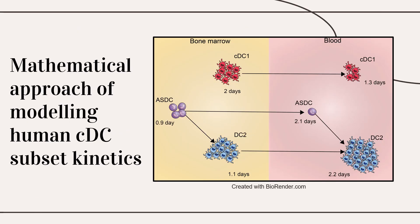All together, these data predict the average circulating lifespan of ASDC to be around 2.1 days, CDC1 for 1.3 days, and DC2 and DC3 for 2.2 and 2.3 days, respectively.